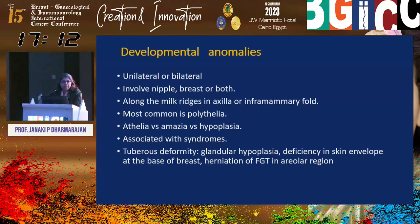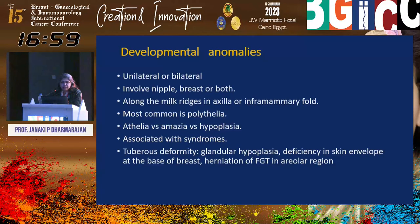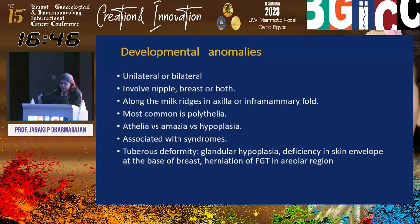Developmental anomalies can be unilateral or bilateral, may involve the nipple, breast, or both. They are usually present along the milk ridges in the axilla or intramammary fat, and the most common is polythelia. We should differentiate between athelia, amasia, and hypoplasia, and association with syndromes like Poland syndrome has to be considered. Tuberous deformity of the breast can occur, leading to glandular hypoplasia, and this should be noted so the patient can be offered corrective surgery.